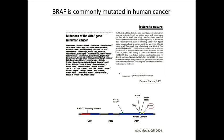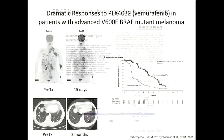They actually mislabeled the sequence of BRAF in the initial Nature paper. So initially, the common mutation found in about 95% of BRAF-mutant tumors was called V599E — this was ultimately corrected to V600E a couple of years later.